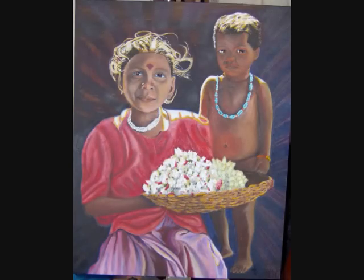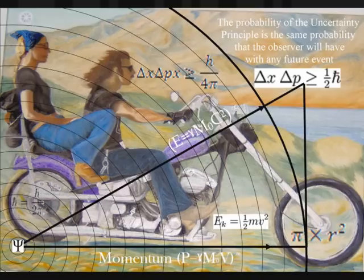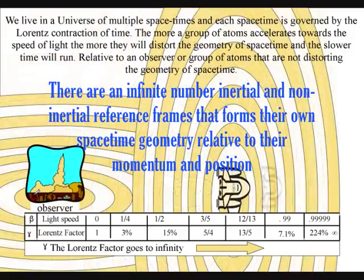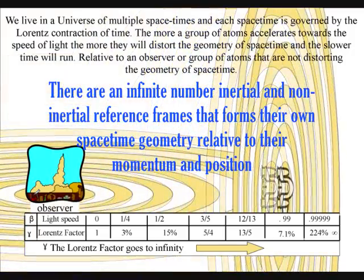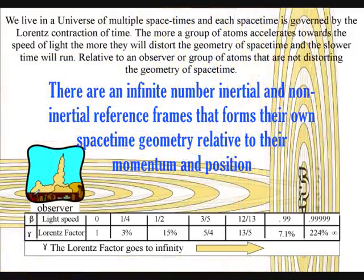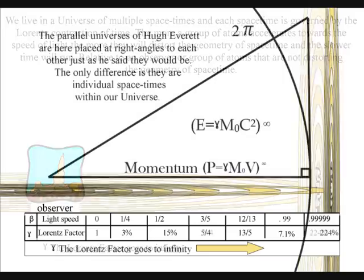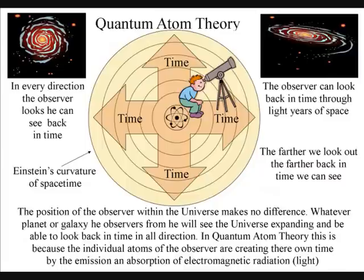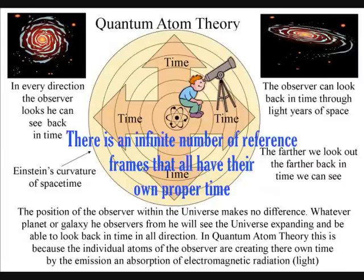In this theory, there is no universal time, because the universe is made up of an infinite number of reference frames that have their own proper time relative to their momentum and position. Therefore we are all in a unique position at the centre of our own reference frame and can look back in time in all directions at the beauty of the stars.